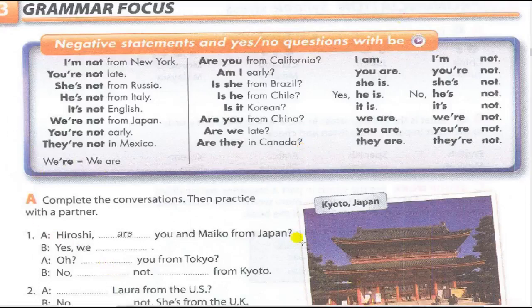Negative forms: I am not. You are not. He/she/it is not. We/you/they are not. Contractions: he/she/it isn't. We/you/they aren't.